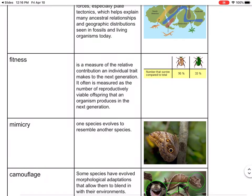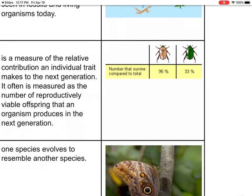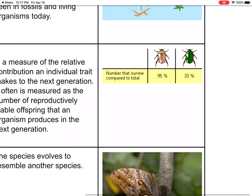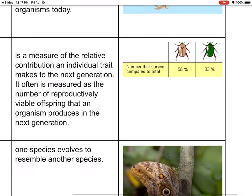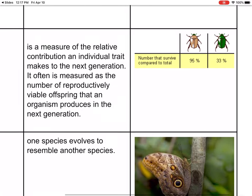Fitness basically means how fit you are as a species — it measures the relative contribution an individual trait makes to the next generation. So if it is beneficial to have pointy horns on a beetle, then that organism, that beetle, would keep producing that trait.